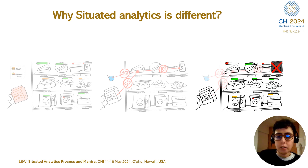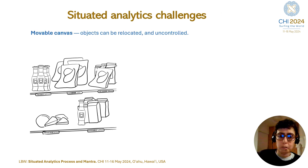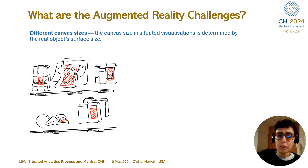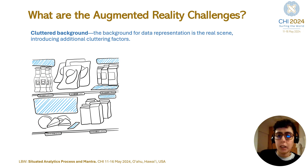The user then discovers that the chosen cheese has a high sodium content, so he adjusts the query by filtering the sodium content, which modifies the visual representation based on the low sodium requirement. So what are the challenges in this scenario? First, objects can be relocated and are uncontrolled. The canvas size in Situated Visualization is determined by the real object's surface size, and the data nodes are the physical objects in the real scene that cannot be virtually rearranged. The background for data representation is the real scene, introducing an additional cluttering factor.